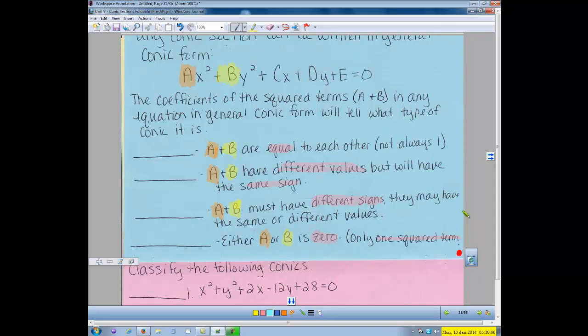This is not always equal to 1. When a and b have different values but they have the same sign, we have what's called an ellipse.